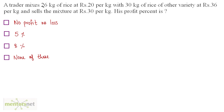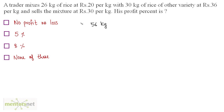We have 26 kgs of rice mixed with 30 kgs of rice, so in all we have 30 plus 26 kgs of rice, which is 56 kg. Now we can calculate the cost price of this 56 kg, equal to the cost price of 26 kg plus the cost price of the remaining 30 kg of the other variety.